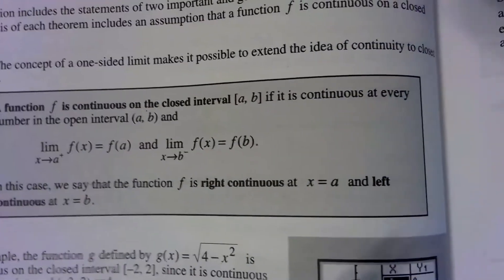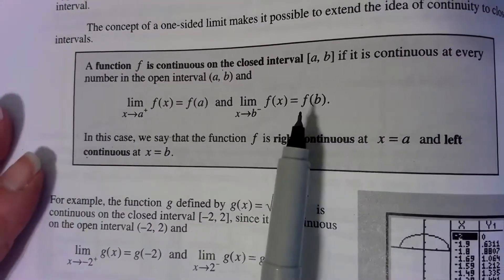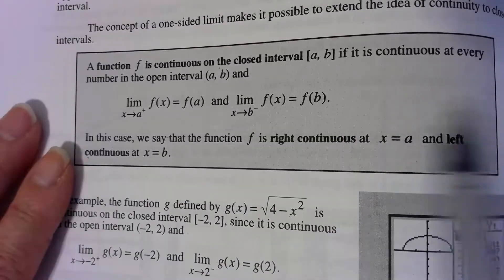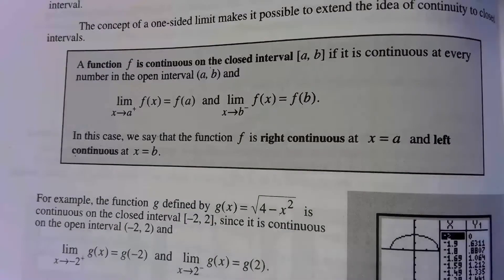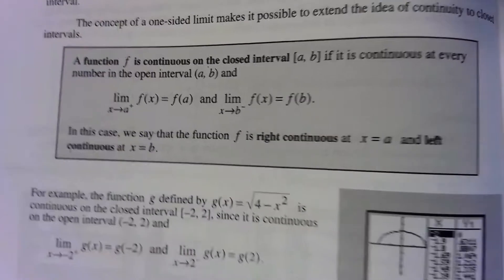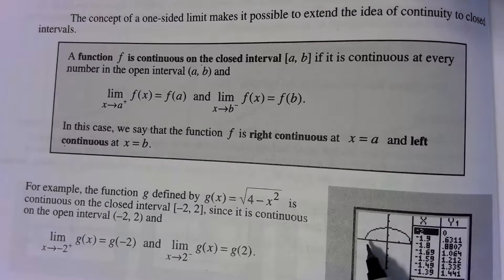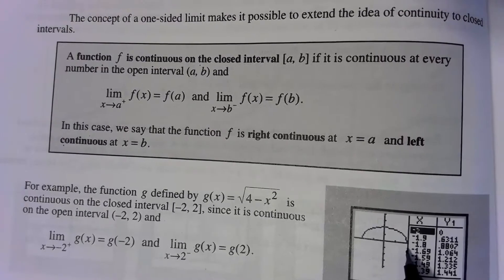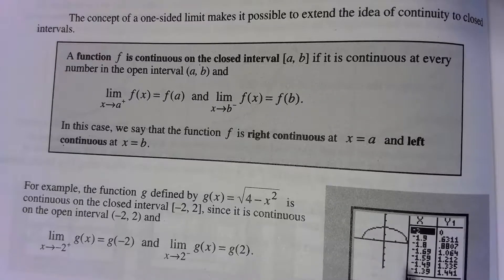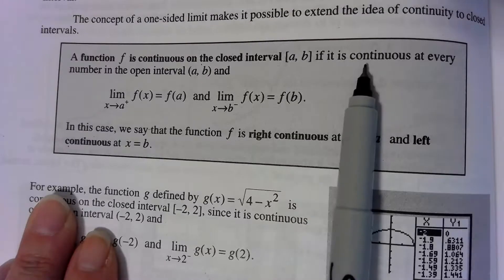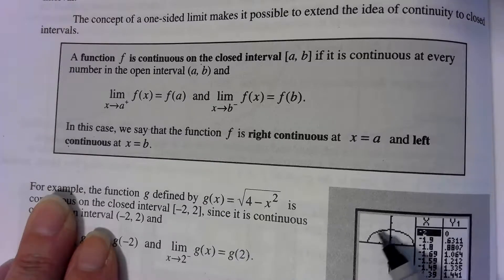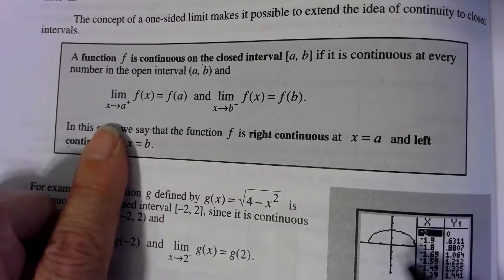Now we're talking about endpoints and continuity on an interval. If I'm thinking about a half circle, I can take the limit from the right as x approaches negative 2, but I can't take it from the left. And as x approaches 2, I can't come in from the right, but I can come in from the left and get a value of 0. A function is continuous over a closed interval — meaning endpoints included — if it is continuous at every number in the open interval, meaning every number in between those endpoints.